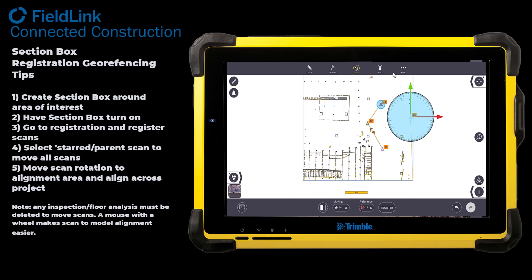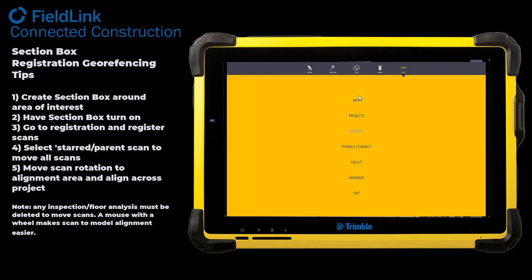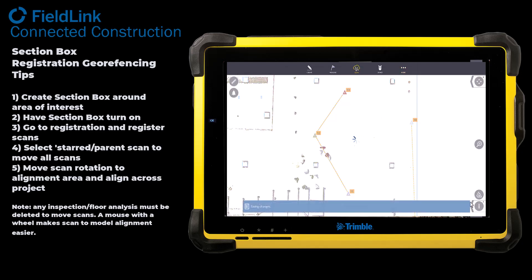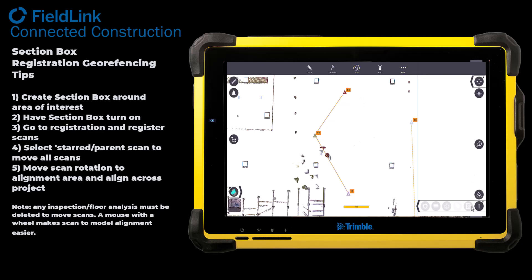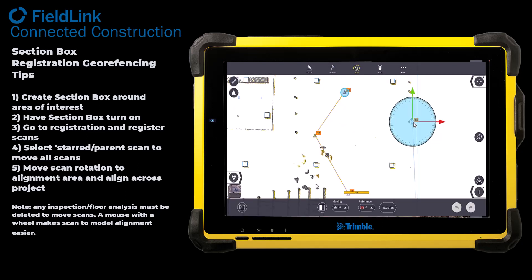Hey, Steve with Trimble and the Building Point teams. Today's Field Link tip is going to show you how to use section box and registration to help ensure that pre-registration goes correctly. As you can see, I already have a section box turned on, and I can do that by simply coming here and going to the section box, turning it on, and then going into Register when I have the scan — my moving scan — selected.